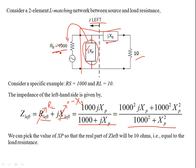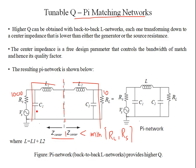So the shunt reactance is in parallel with the high impedance. In the pi network, the shunt is already in parallel with the high source impedance, and Zcenter must be less than 1000 ohms. For the second L network making up the pi network, if the load is 10 ohms, Zcenter must be less than both values — less than the minimum of Rs and RL — because the shunt reactive element C2 is in shunt with the load resistance.